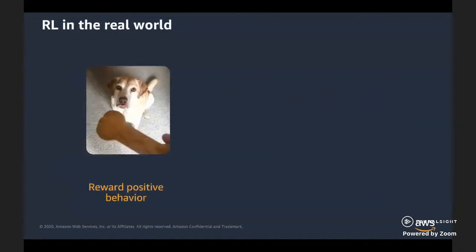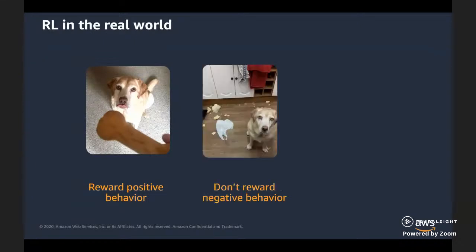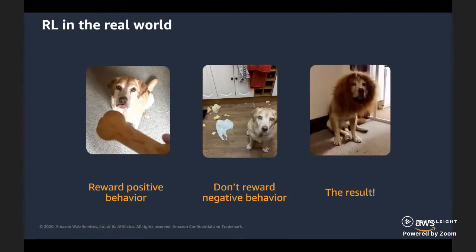Reinforcement learning is built on an idea quite often used by humans. Think about the method used to train a pet: we give cookies for good behavior and don't give cookies for bad behavior. Training can involve simple actions like sit or stay, or more complicated series of behaviors — if you're very successful, you may even be able to train your dog to do circus tricks.